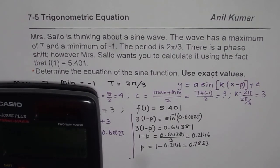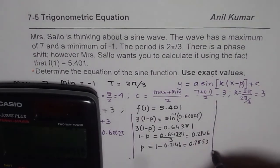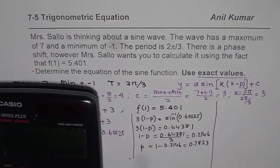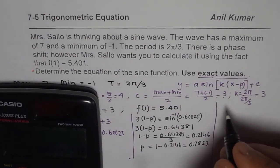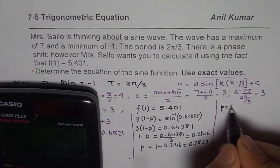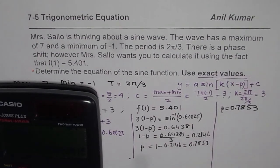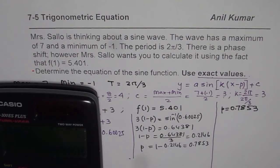0.7853 is what we get as the value of p. Now, you could have written that but the question really is we have to write exact value of p, the phase shift. How do you find this? Let me write bold and clear here: we have p = 0.7853. How should we write this as an exact value? That is the main question here. Can you suggest? You can pause the video, write down your answer and then check with mine.